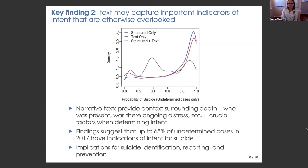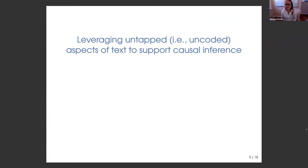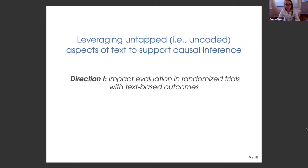That's the first application — the least causal of the bunch — focused on scaling up human coding efforts and learning more about suicide indications using available data. Now shifting to leveraging uncoded aspects of text to support causal inference: first in a randomized experiment, and then in an observational study.